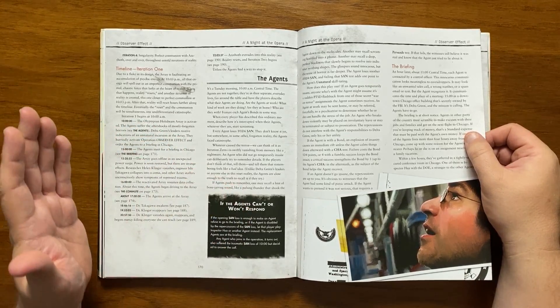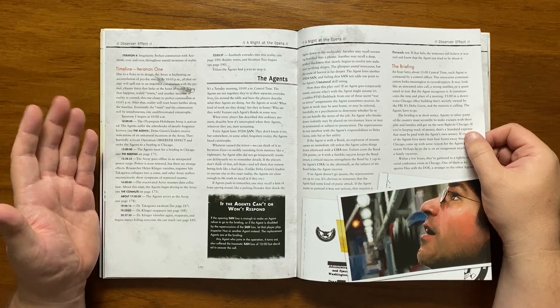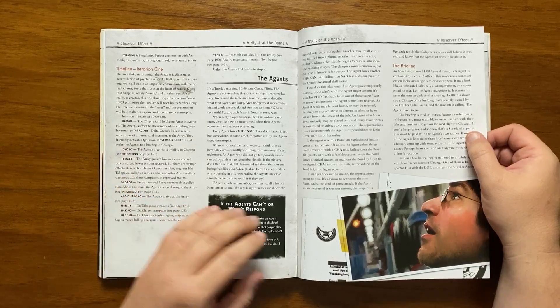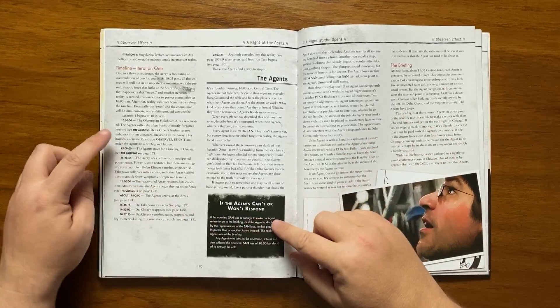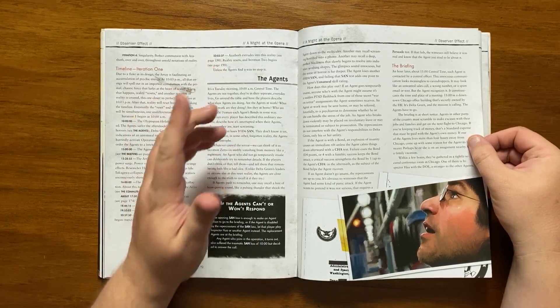This iteration, as previously explained, starts at 10am with the aftershocks washing over the players. The Delta Green leaders activate Operation Observer Effect and gather the agents. It gives us a timeline of each of the important triggered events along with the wiping out of reality at 2203, unless the agents find a way of stopping it.